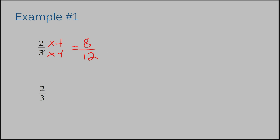Two-thirds is the exact same thing as eight-twelfths. Whenever you do something to your numerator and you do that exact same thing to your denominator, you're going to end up with a fraction that is equivalent to it, but it's going to look different. Two-thirds — you could think of it as my dollar bill, like I explained in my last example — and eight-twelfths is like my four quarters. These have the same value, but they look different.